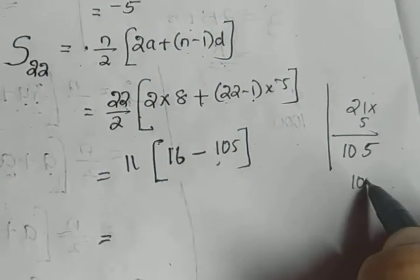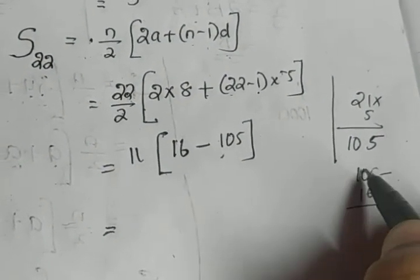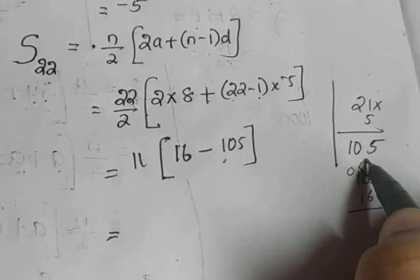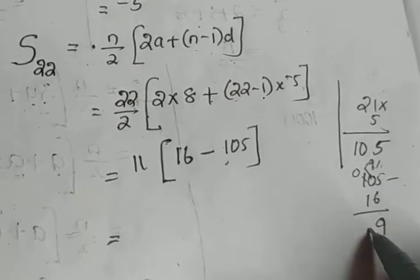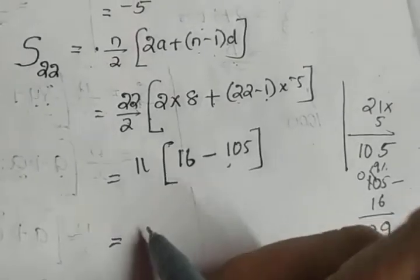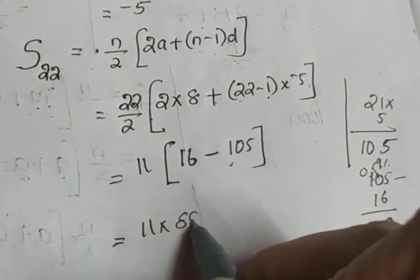So what we have to do: 105 minus 16. What we will do: this becomes 9, 15-6 gives you 9, 9-1 gives you 8. So it's 89, and we have 11 into 89.